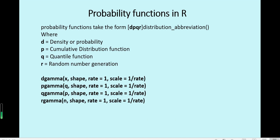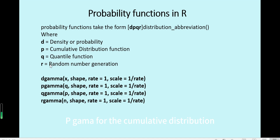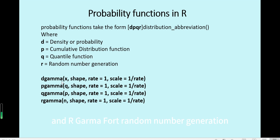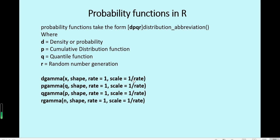To use gamma distribution functions in R, there are four functions: dgamma for the density, pgamma for the cumulative distribution probability, qgamma for the quantile value, and rgamma for random number generation. The parameters include shape and rate, where rate (lambda) defaults to 1. You can use either rate or scale but not both, and scale equals 1 divided by rate.